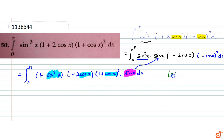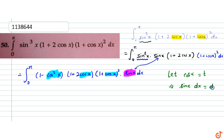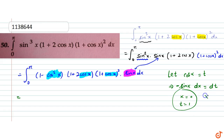We substitute cos x = t. Since the derivative of cos x is −sinx, we get sinx dx = −dt. Now changing the limits: when x = 0, t = cos 0 = 1; when x = π, t = cos π = −1.